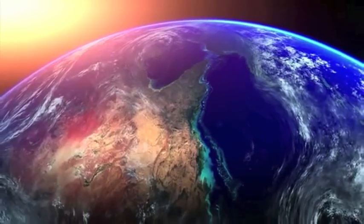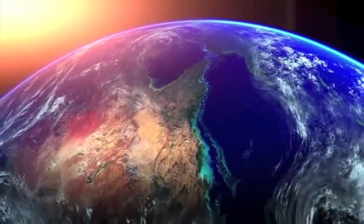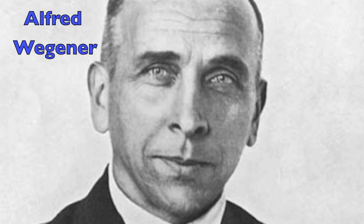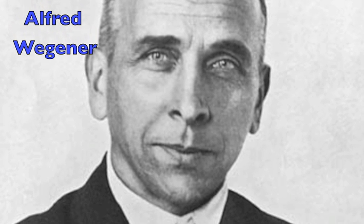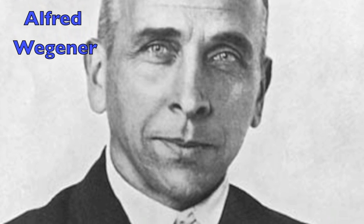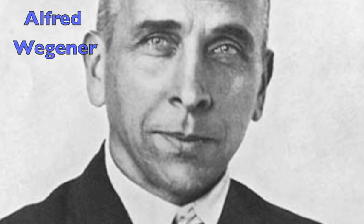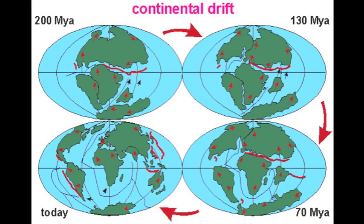So let's get started with the great Alfred Wegener. In the early 1900s, Alfred Wegener came up with a theory of continental drift — the idea that continents have been shifting positions on Earth's surface over time.